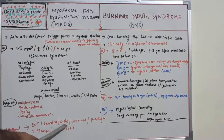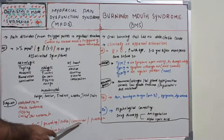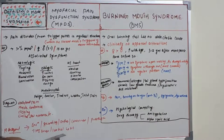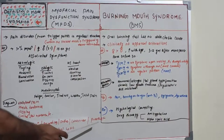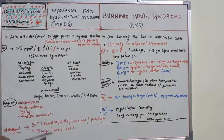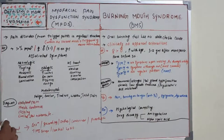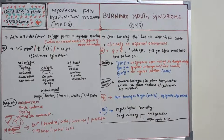These seven R's — Remove, Reshape, Reposition, Restore, Replace, Reconstruct, and Regulate — correspond to extraction, grinding, orthodontic treatment, conservative treatment, prostheses, TMJ surgery, and control of habits respectively. These seven steps form the complete management approach for Myofascial Pain Dysfunction Syndrome.